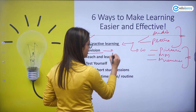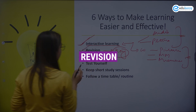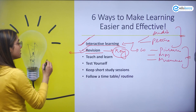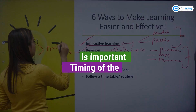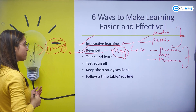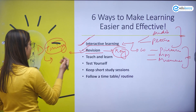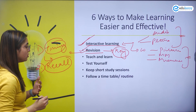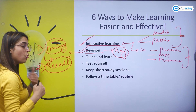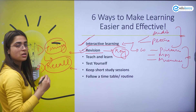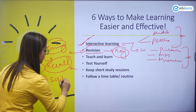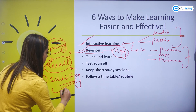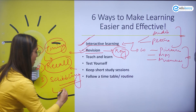The next thing is revision. Revision is the key. While revising any topic or chapter, you need to keep certain things in mind. The first is the timing of the revision — you have to revise the topic before you forget. The second thing is recall: while doing revision, you need not read the whole topic again; you just have to recall the important points. Another technique is scribbling — while doing revision, you can scribble the important points on your rough paper.